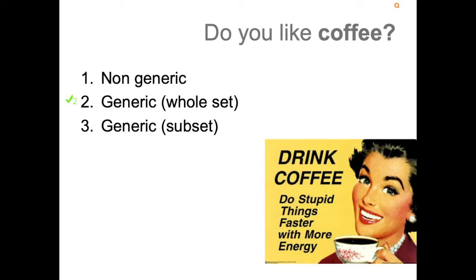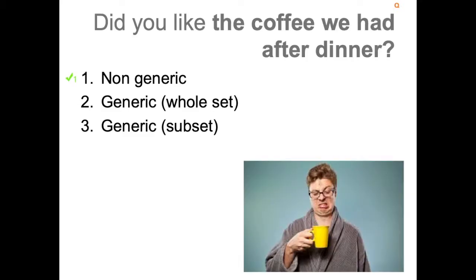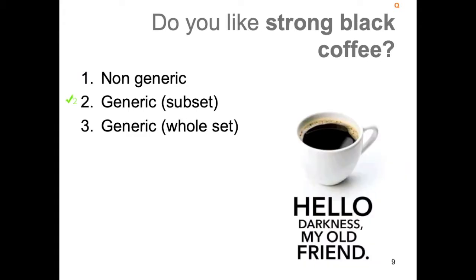'Do you like coffee?' This does not pose any problem. You're referring to the whole set, therefore this is generic. 'Do you like the coffee we had after dinner?' Here, in the case of non-generic reference, the coffee is clearly identified thanks to the relative clause 'that we had after dinner.' 'Do you like strong black coffee?' This is a tricky one that usually makes people very confused, and it is actually generic because we're still referring to a subset — strong black coffee is still a subcategory of coffee and considered as generic.